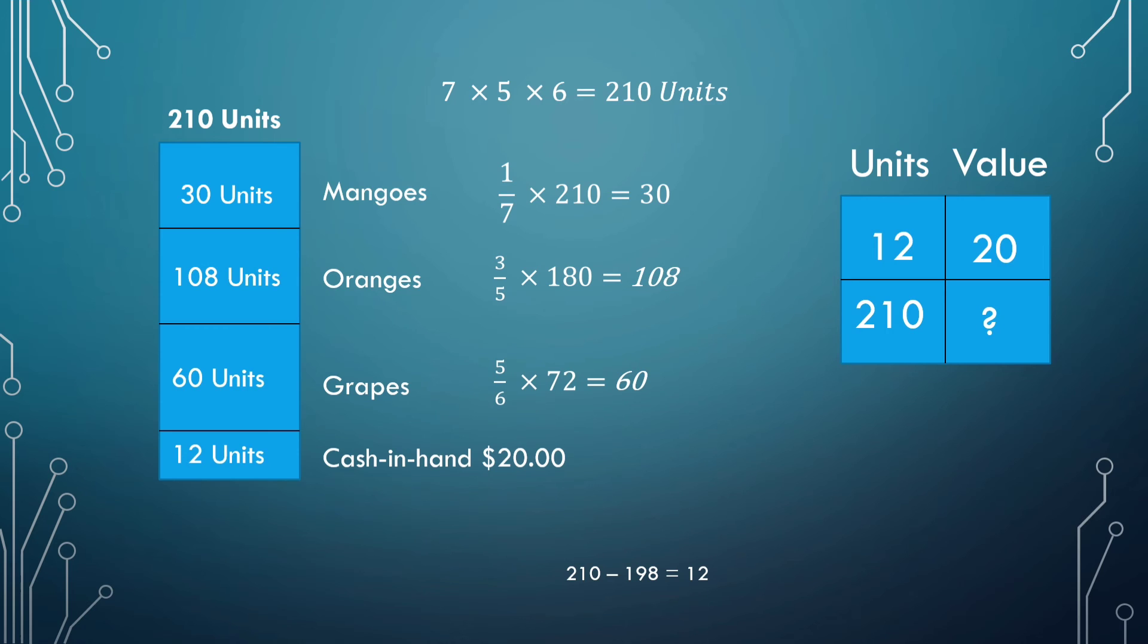This particular setup is called a ratio box. To get the unknown quantity, we multiply the known diagonal and divide that by that unit in the next diagonal. That is to say, the unknown quantity is equal to 20 times 210 divided by 12. This would give me $350.